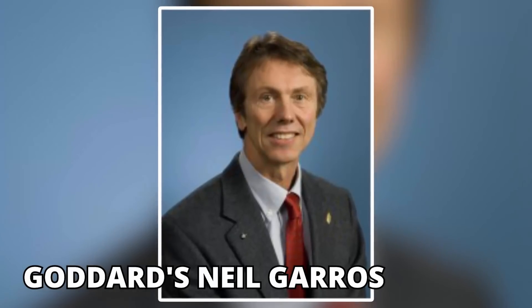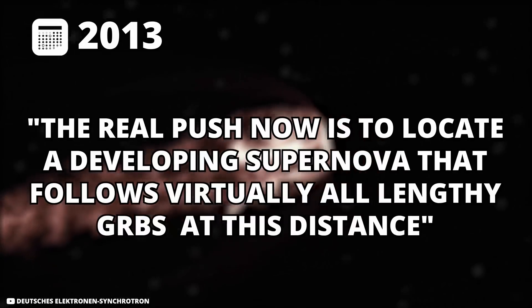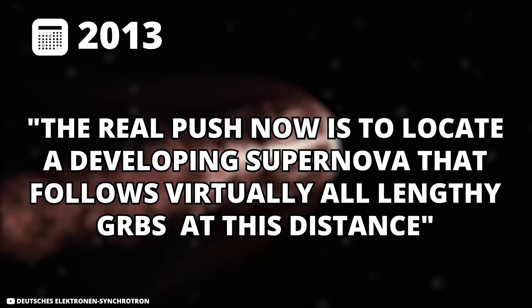GRBs can result in the appearance of a supernova at the same location a week after the outburst. And Goddard's Neil Gehrels, the principal scientist for Swift, said in 2013 that the real push now is to locate a growing supernova that follows virtually all lengthy GRBs at this distance.